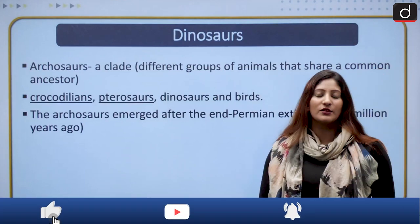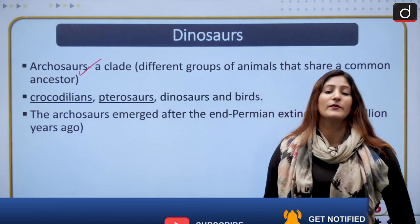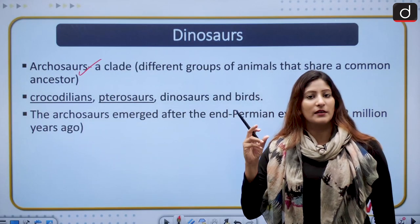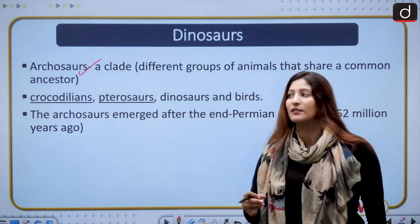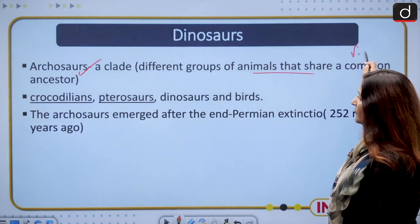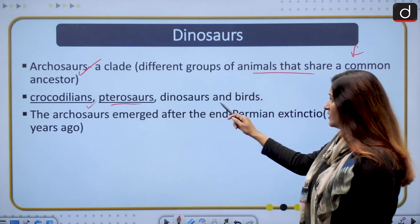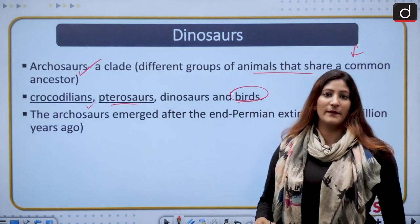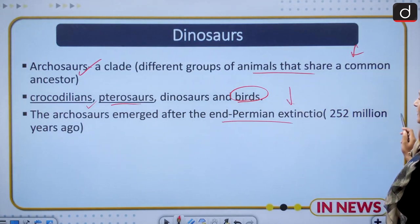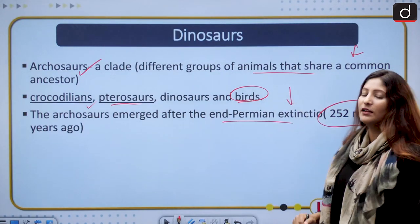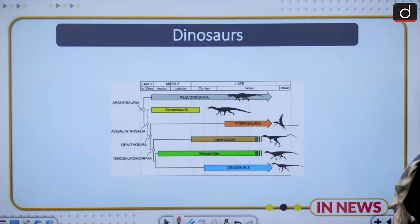Who are dinosaurs? They belong to the Archosaurs. Archosaurs is a clade—they trace their origin from a common ancestor. This is a different group of animals, and this also pertains to crocodilians, pterosaurs, dinosaurs, and even birds. The archosaurs emerged after the end of the Permian extinction, 252 million years ago.